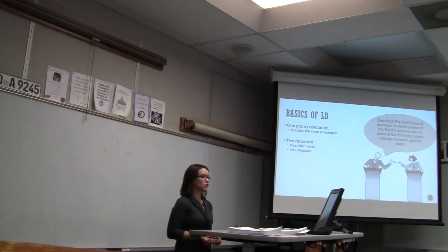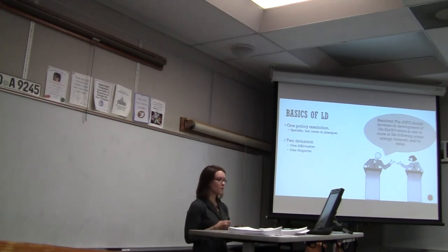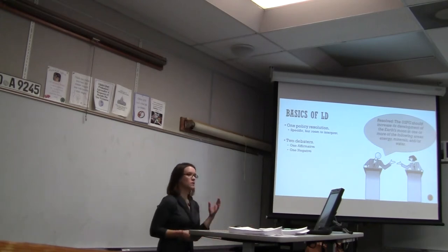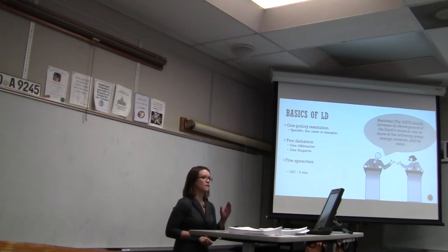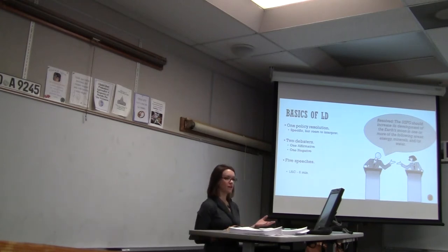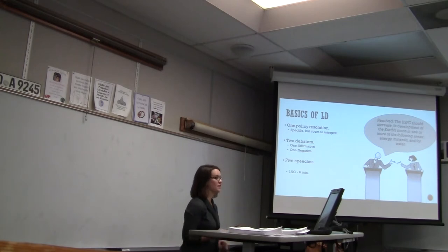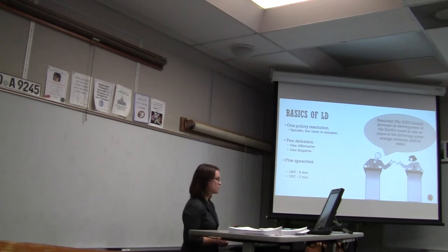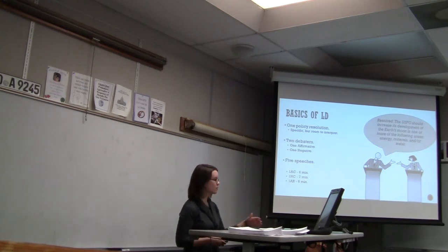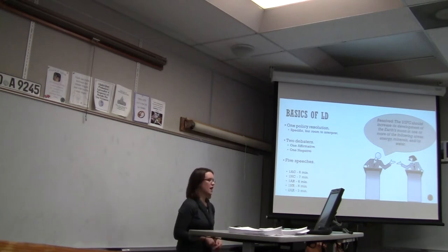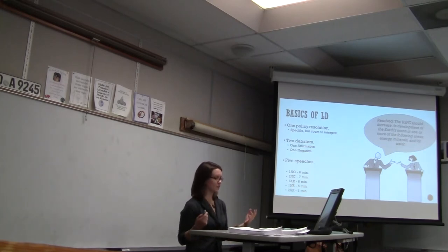The way an LD round looks is that there are two debaters — one affirmative and one negative — and you have specific time allotments, taking turns giving speeches. There are five speeches total. The first affirmative constructive is six minutes, where you lay out your case. The first negative constructive is a seven-minute speech in which they respond. Then there's the first affirmative rebuttal, another six minutes; the first negative rebuttal for six minutes; and then the second affirmative rebuttal for three minutes, which is the last speech in the round.